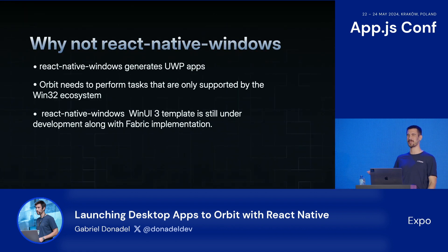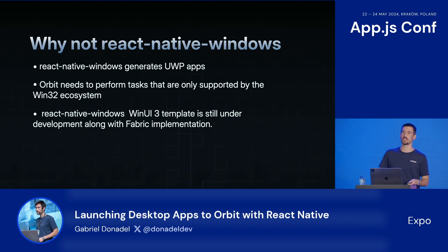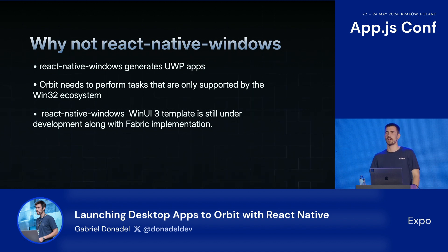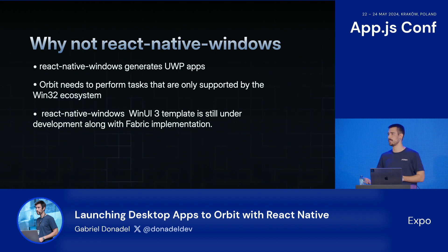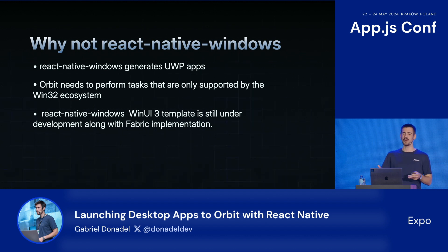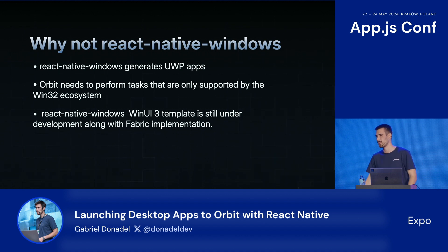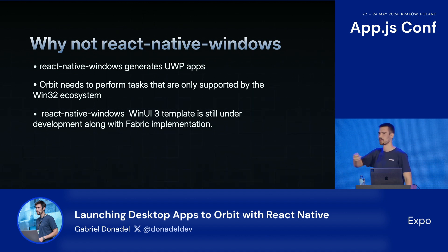React Native Windows generates, at least by default, UWPs — Universal Windows Platform applications — which kind of work for most cases, but wouldn't really cut it for Orbit. Orbit needs to perform tasks only available through the Win32 ecosystem, including things like working with any file on disk without user intervention, reading keys from registries, or using the system tray API. In theory, we could make that work by creating our own custom Windows template and setting up a custom Win32 app. But Microsoft is already working on implementing Fabric, and along with that, React Native Windows will come by default with a WinUI 3 template which would be compatible — but we're still waiting for that, and it wasn't available when we developed Orbit.